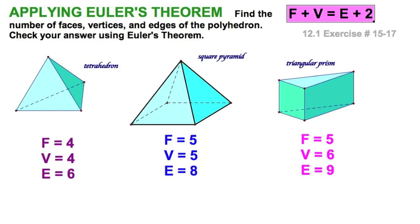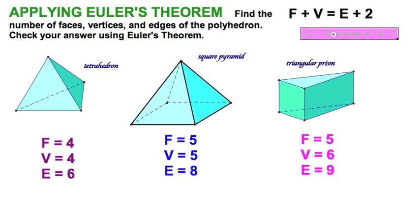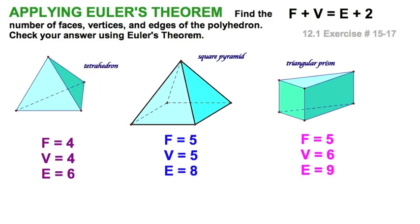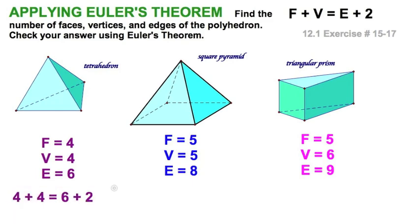Let's apply Euler's theorem — exercises 15 through 17 in your textbook. We have three figures. The tetrahedron, which we've already discussed: clearly four triangular faces, four vertices, and six edges. Four plus four equals six plus two. Well done.